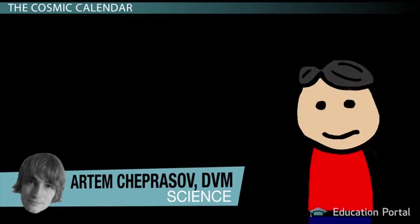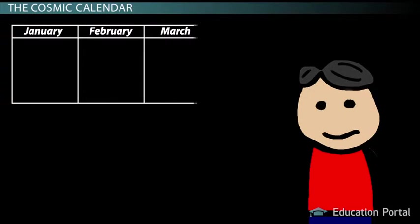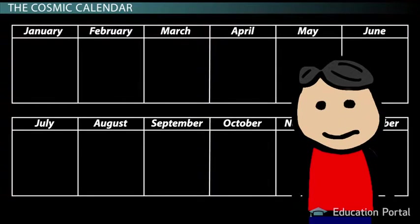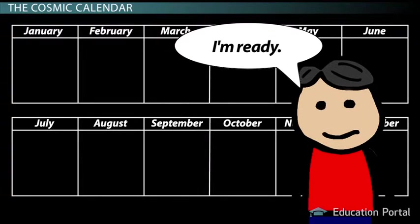For this lesson, we'll engage in a little activity. You can either follow along on screen, or take out a calendar and follow along that way to appreciate what a human lifetime means in the grand scheme of the history of the universe when it's condensed to one calendar year.